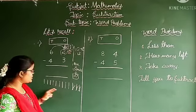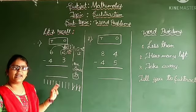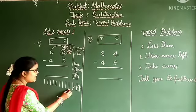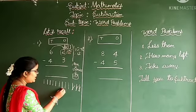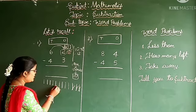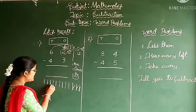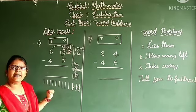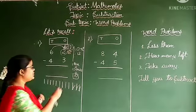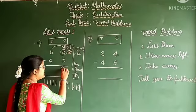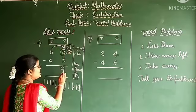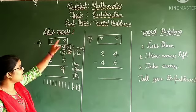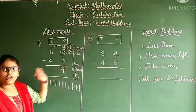Now check how many lines are remaining: 1, 2, 3, 4, 5, 6, 7, 8, 9. Nine lines are left. Write this 9 under the 1s column.